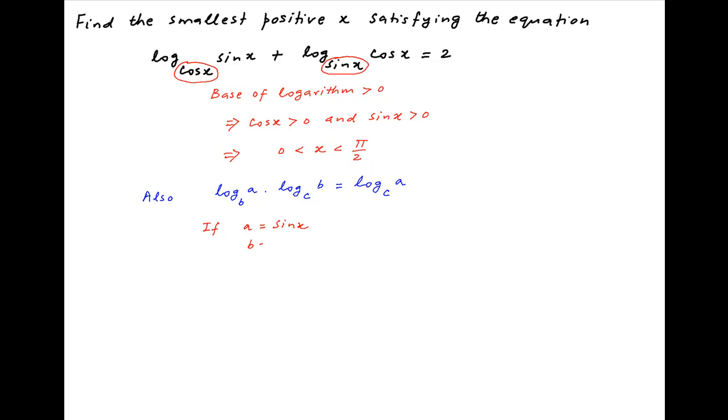Now replace a with sin x, b with cos x and c with sin x. Therefore we get log of sin x to the base cos x multiplied by log of cos x to the base sin x is equal to log of sin x to the base sin x which is equal to 1.